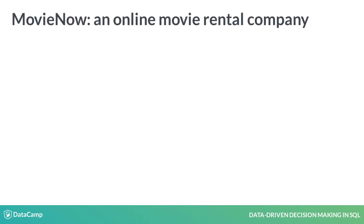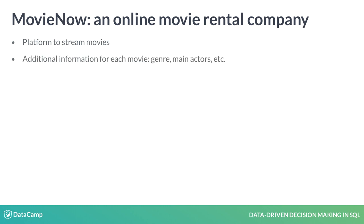Throughout this course we will work with the PostgreSQL database from a fictional movie rental company called MovieNow. MovieNow offers an online platform for streaming movies. Customers can rent a movie for 24 hours. For all movies the company stores additional information such as the genre or the main actors. MovieNow also stores information about customers and movie ratings.